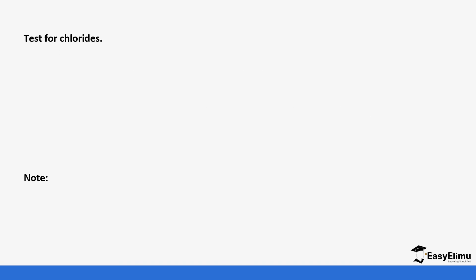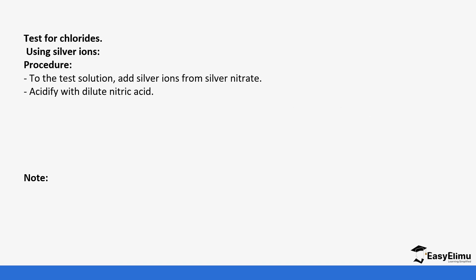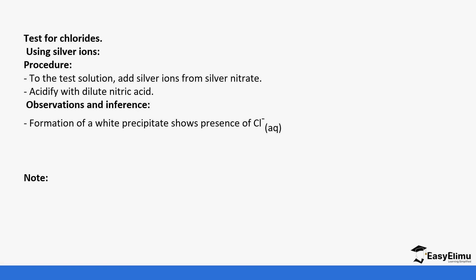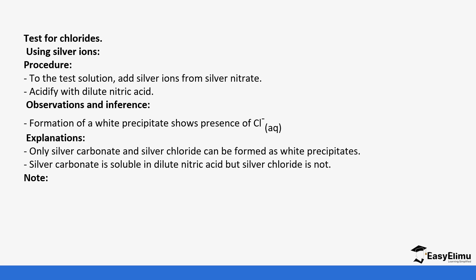To test for chloride ions in the lab, we can use silver ions. Add silver nitrate to the test solution, then acidify it with dilute nitric acid. You will notice the formation of a white precipitate due to the presence of chloride ions. Note that both silver carbonate and silver chloride can form as white precipitates, but when we add the acid, silver carbonate dissolves while silver chloride does not. Adding silver nitrate first forms a white precipitate — this initially suggests the presence of chloride ions or carbonate ions.